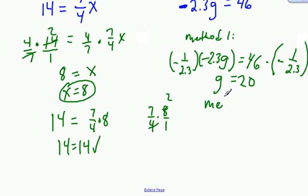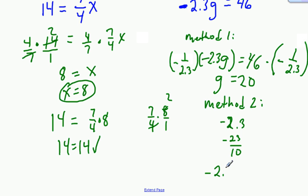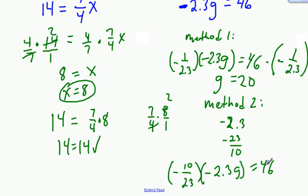The other method is to convert negative 2.3 into its fraction form — that's negative 23 tenths. When I use the reciprocal, I'll use negative 10 over 23. So on negative 2.3G equals 46, my transformation is to multiply both sides by negative 10 twenty-thirds. That works out: the 23's cancel, we still have a negative, so 2 times negative 10 gives negative 20 — so G equals negative 20.